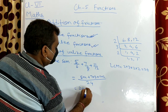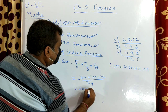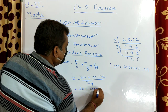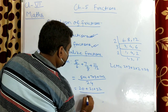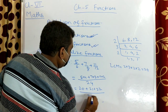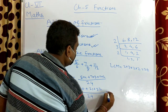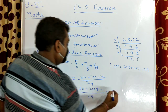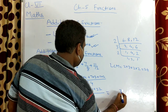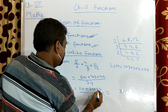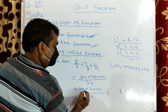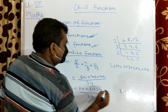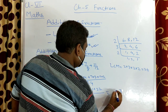The answer is 63 by 24. In this way we can solve problems on addition of like fractions and unlike fractions. Thank you.